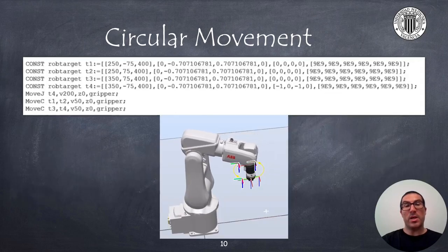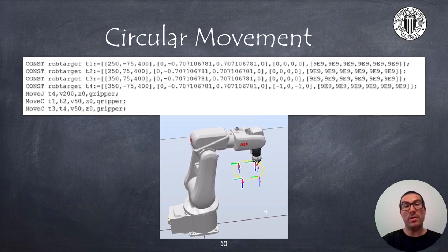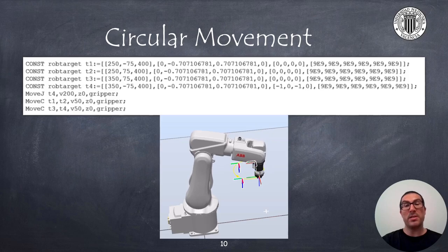Here, we see the code example that allows you to do a full circle. The first instruction performs a nonlinear movement to position T4, but then performs a circular movement to position T2, passing through T1, and again returns to position T4, passing through T3, to complete the circle.